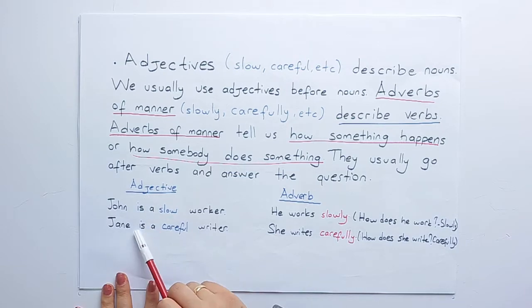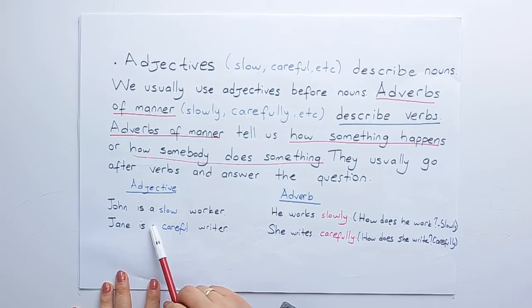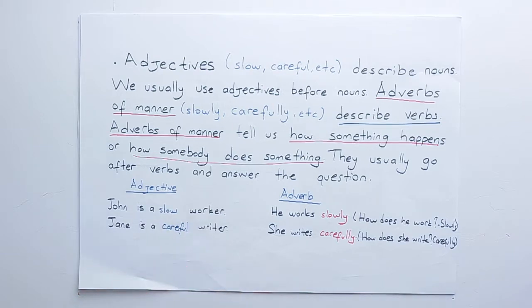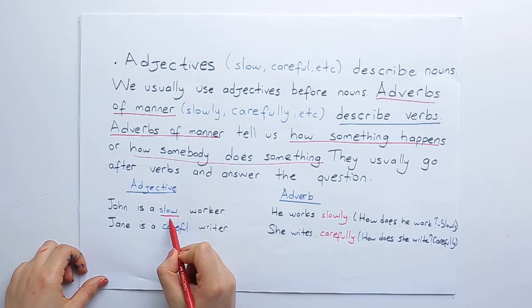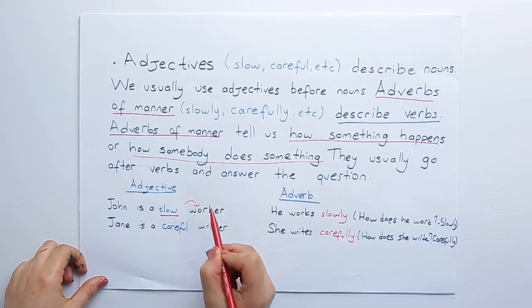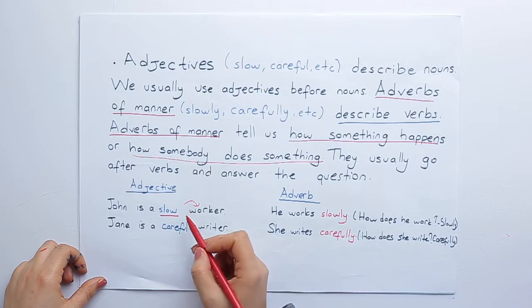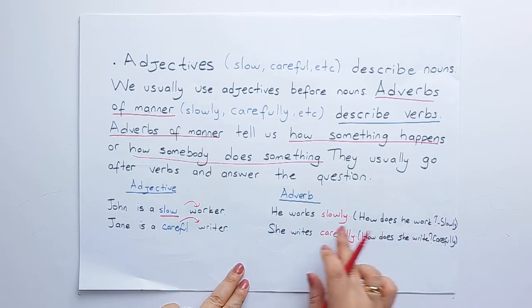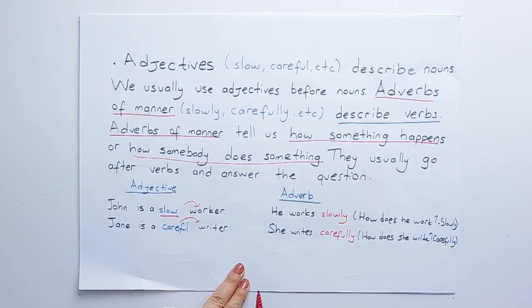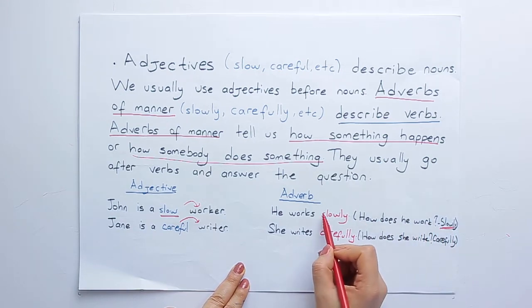Here we have examples about adjectives. John is a slow worker. Here 'slow' describes the noun. John is a careful writer — it describes 'writer.' But when we look at the adverb: he works slowly. I ask, how does he work? The answer will be 'slowly.'